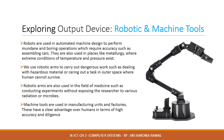Let us learn about robots and machine tools. Robots are able to perform a variety of tasks by executing instructions supplied in the form of a pre-recorded program. We see a lot of robots and androids in science fiction films, but we have a long way to go to reach that level of technology. Robots are used in automated machines designed to perform mundane and repetitive operations which require accuracy, such as assembling cars.